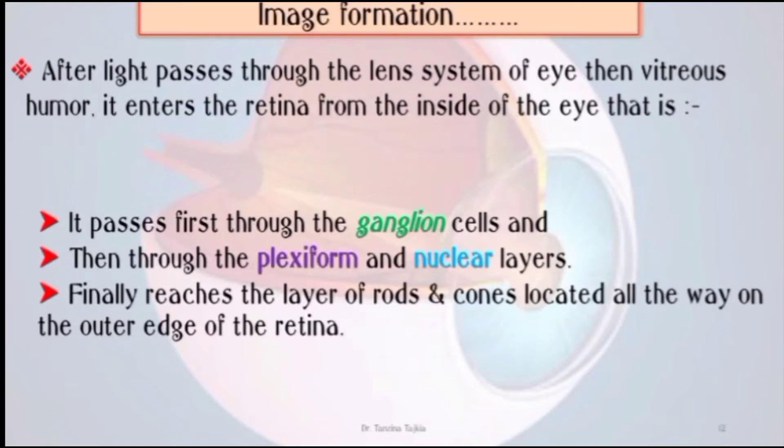After light passes through the lens system of the eye and through the vitreous humor, it enters the retina from the inside of the eye. It passes first through the ganglion cell layer, then through the plexiform and nuclear cell layers, and finally reaches the layers of rods and cones, which are located on the outer edge of the retina.